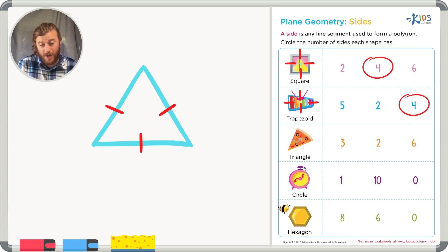And the triangle on the worksheet also has one, two, three sides. There are three separate line segments that connect to make this shape of a triangle. This triangle has three sides.